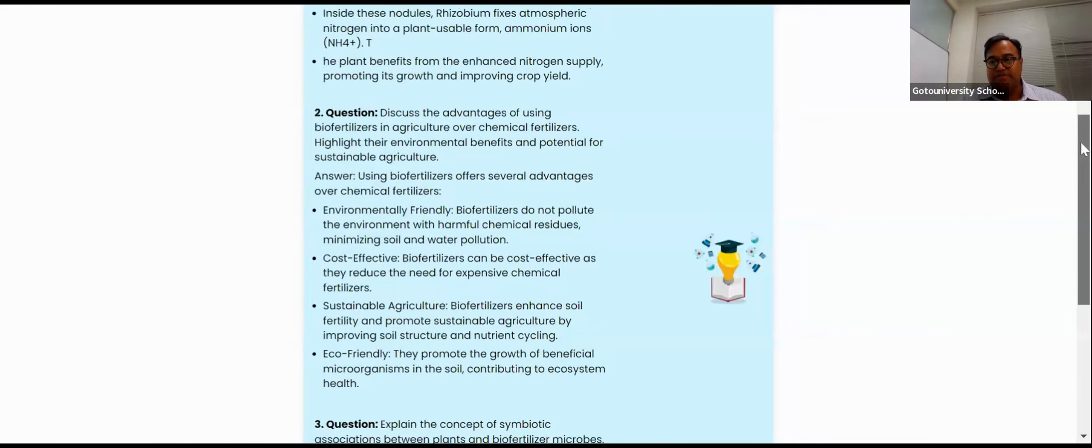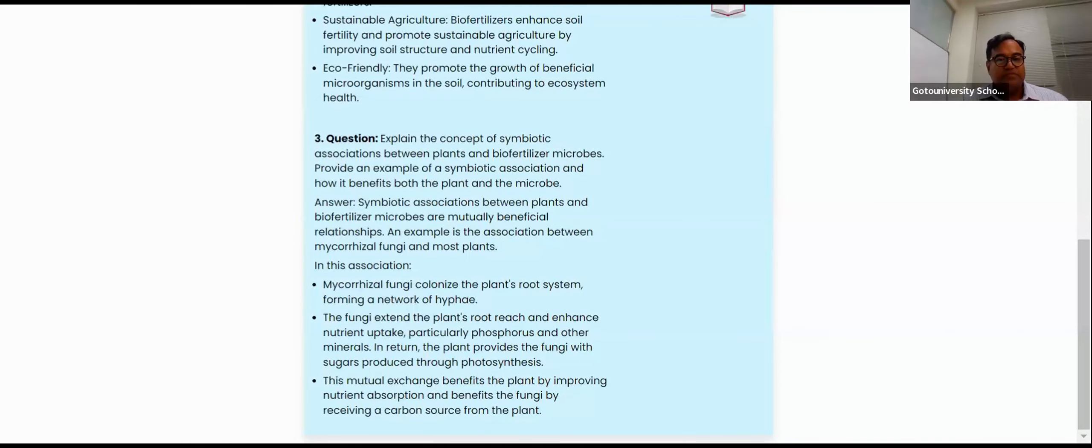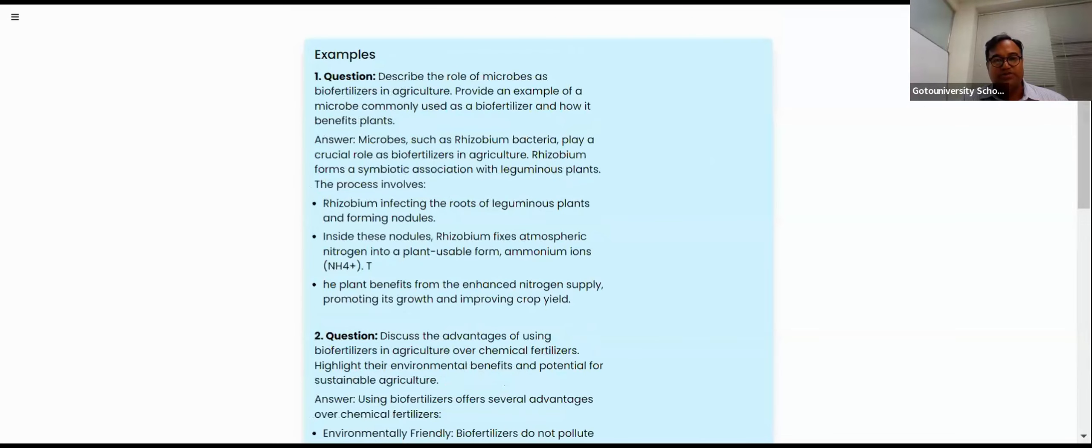Explain the concept of symbiotic association. For that, we need to give the example Mycorrhizob. And then I told already how the growth is supporting the symbiotic association. This is the way your narration should be explained in the exam.